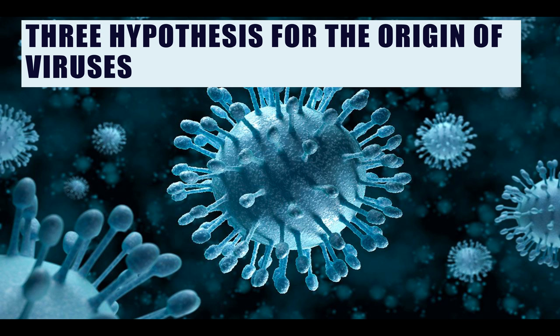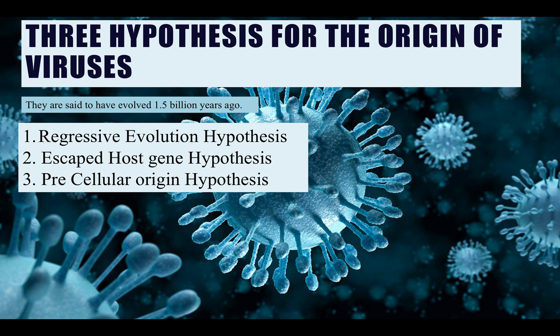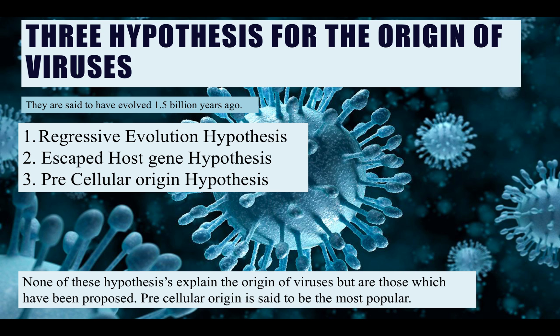There are three different hypotheses for the origin of viruses. Viruses are said to have evolved 1.5 billion years ago. The three hypotheses are the regressive evolution hypothesis, the escaped host gene hypothesis, and the pre-cellular origin hypothesis. However, none of these hypotheses fully explain the origin of viruses — these are just what have been proposed. The pre-cellular origin hypothesis is said to be the most popular of the three.